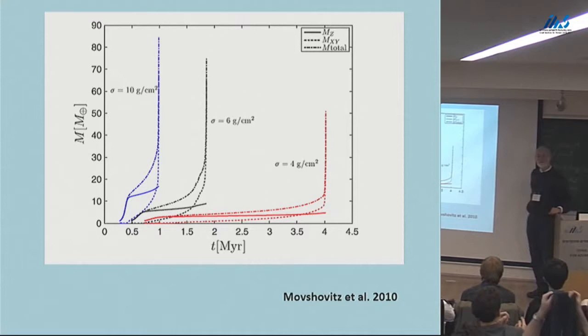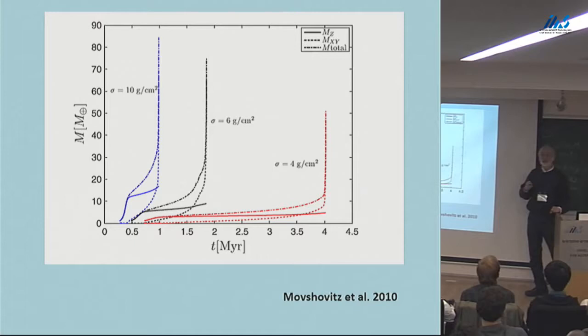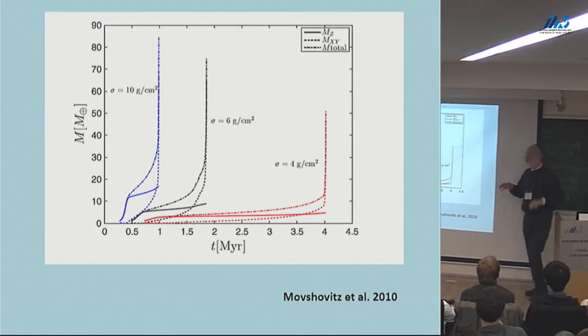Dave's results weren't really sensitive to the surface density in the middle. That's a good point — there are two things: the distance from the sun, which is not a very important factor and mostly fixes the Hill sphere radius, and how much material you have, which is very important. Doesn't the distance from the sun change your temperature and opacity? Not very much.